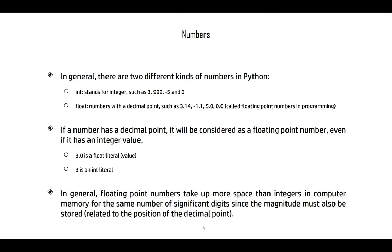If a number has a decimal point, it will be considered as a floating point number, even if it has an integer value. 3.0 is a float literal. A literal is a value that differentiates it from variables.